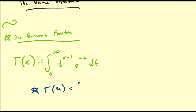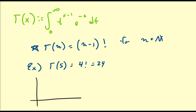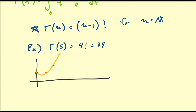Gamma of n is equal to n minus 1 factorial, for n in the natural numbers. For example, gamma of 5 is the same as 4 factorial: 4 times 3 is 12, times 2 is 24. The gamma function extrapolates this — so you can talk about gamma of 1/4, 1/5, and all values in between. It's what we call an analytic extension of the factorial function, so things like 1/2 factorial have meaning through gamma of 3/2.